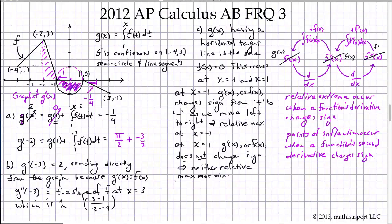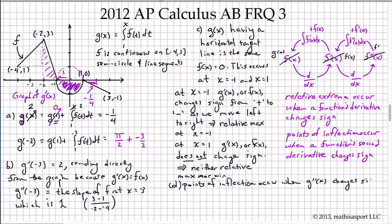Finally, part D asks for points of inflection. Points of inflection occur when the second derivative changes sign, meaning when G double prime changes sign, or equivalently when F prime changes sign, because G prime of X is F of X by the fundamental theorem of calculus.